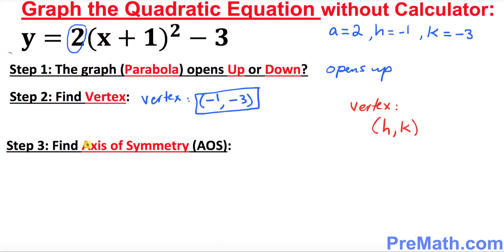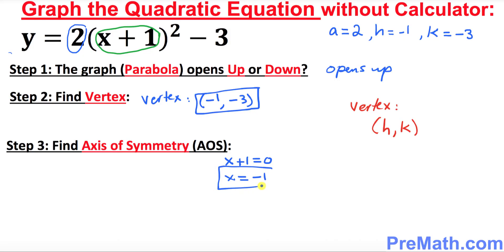In step 3 we want to figure out the axis of symmetry. A really simple way is to take whatever is inside the parentheses — which is x plus 1 — and set it equal to 0. So x plus 1 equals 0, which gives x equals negative 1. That is your axis of symmetry, AOS.